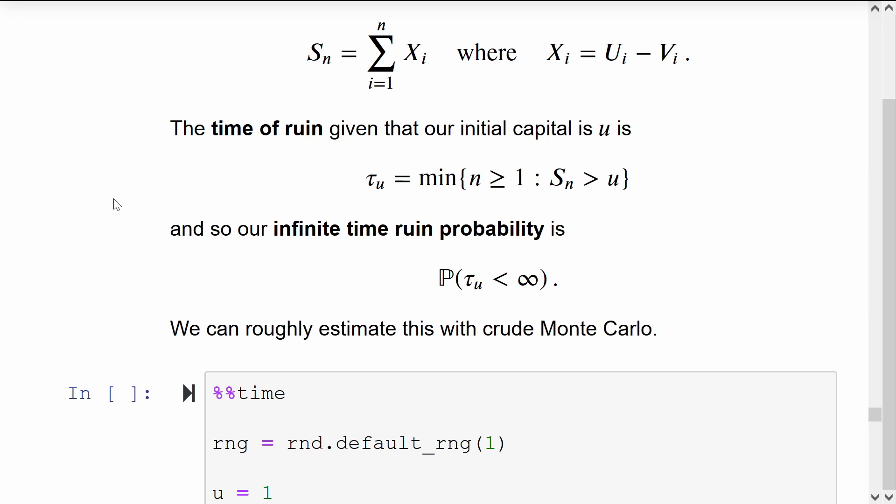We can't use a traditional crude Monte Carlo to estimate this probability because we might be in a scenario which doesn't have ruin and so we might keep simulating this process forever. What we can do is just simulate the processes up to some finite time and use this as a rough lower bound for the infinite time ruin probability.